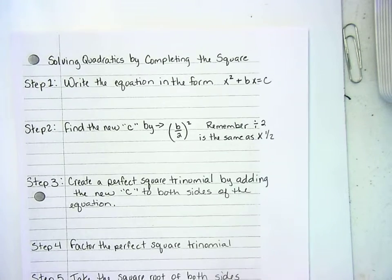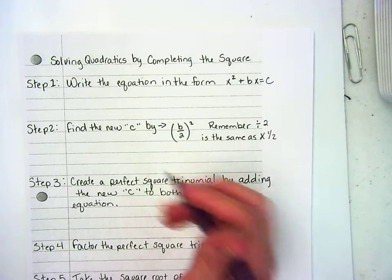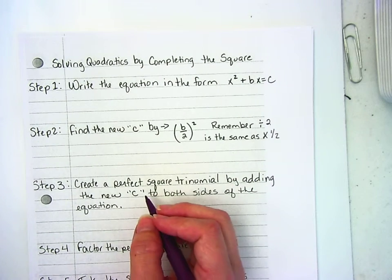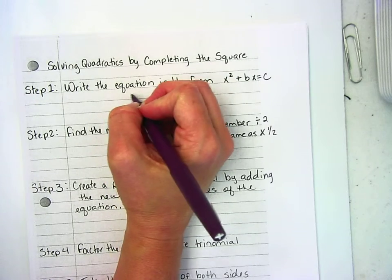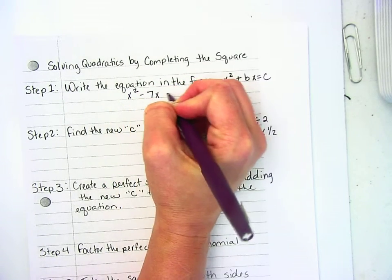And if you haven't done this one, this is one that you want to write down with me and go through it along with me, or check the one that you've done. Okay, it's written out. x² - 7x = 18.